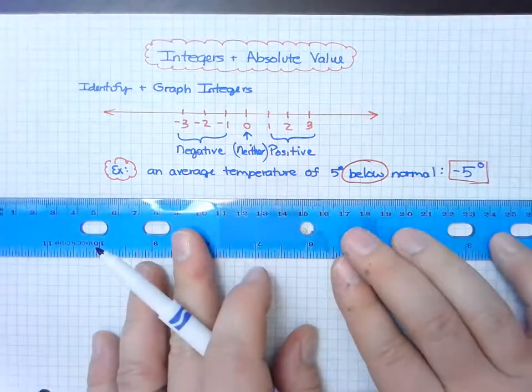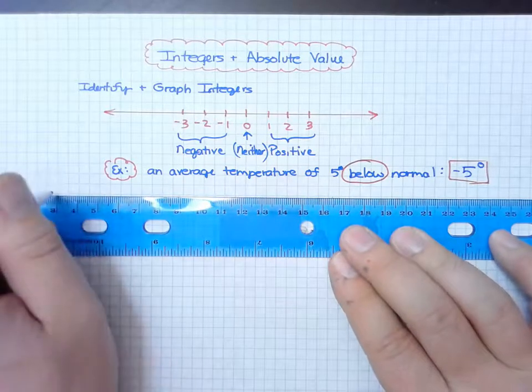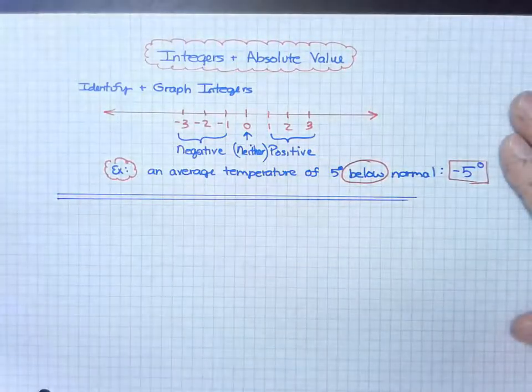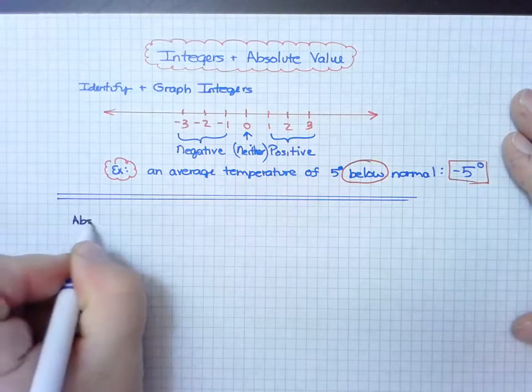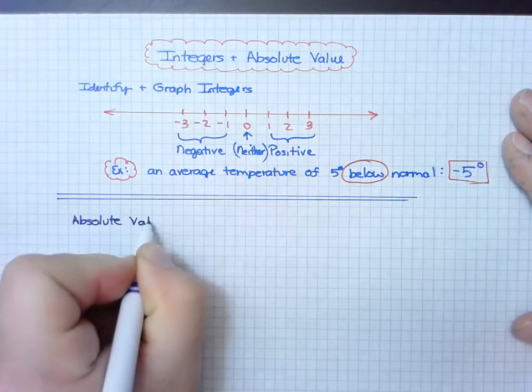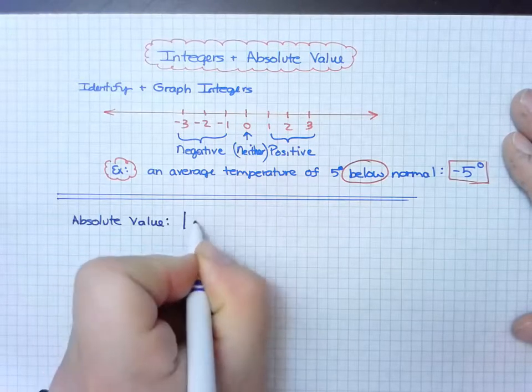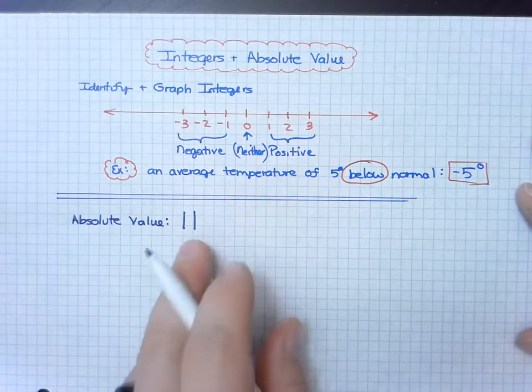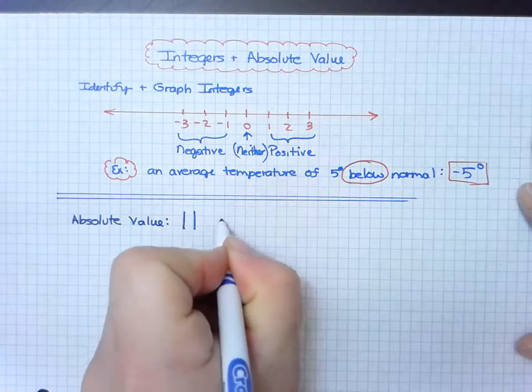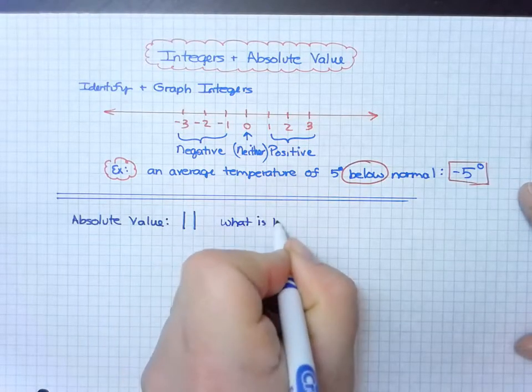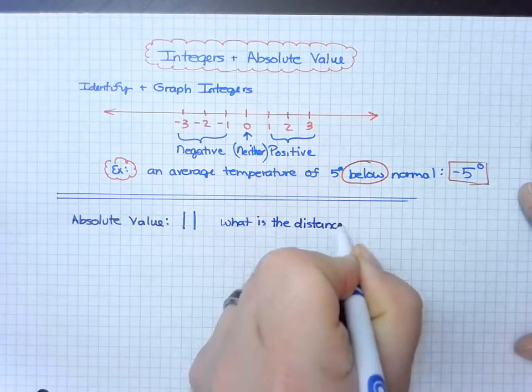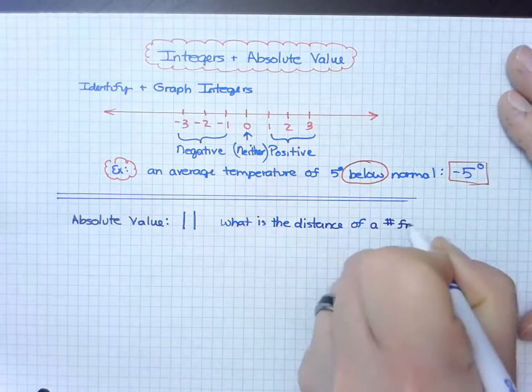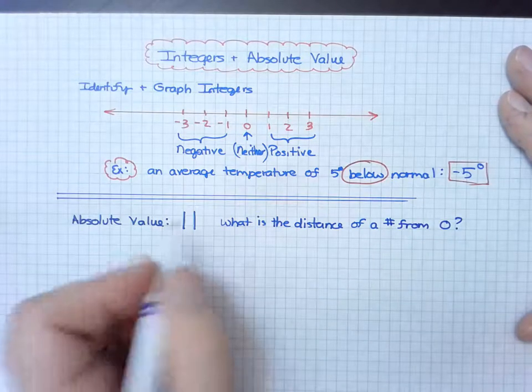The next part I would like to share with you is absolute value. An absolute value uses these symbols - they're straight vertical lines, not parentheses, so make sure you understand that difference. What these do is basically ask: what is the distance of a number from zero? That's really what that's saying.